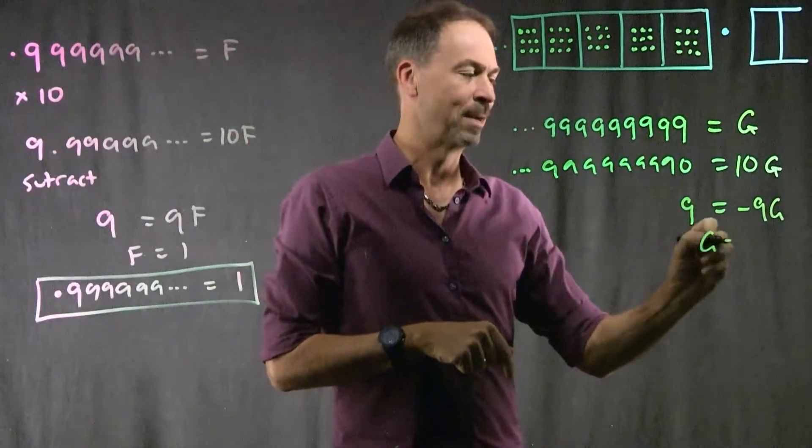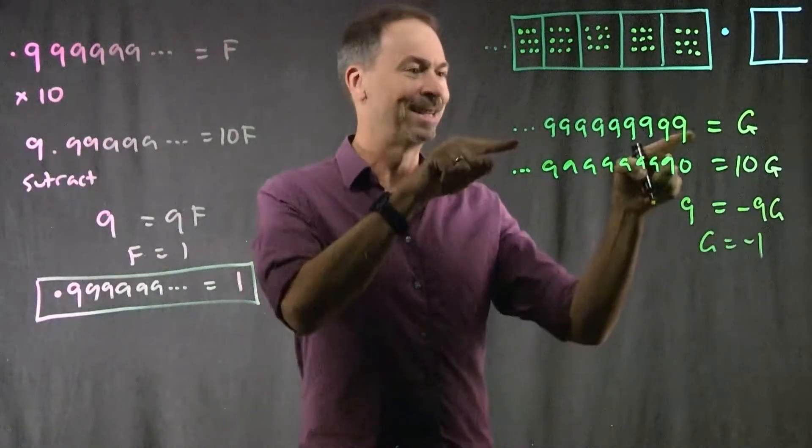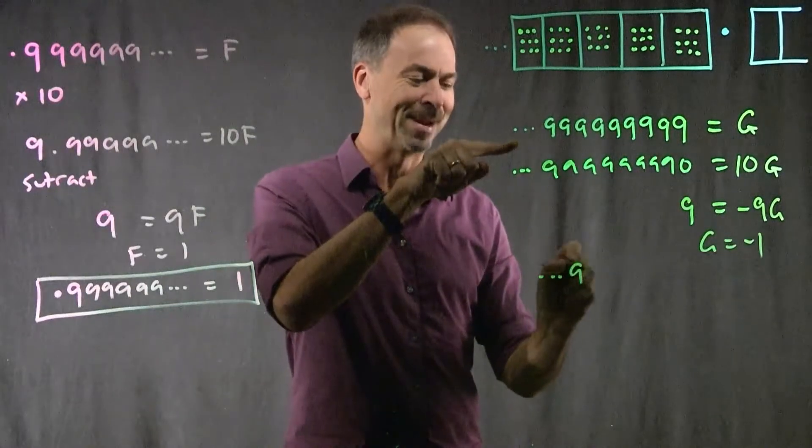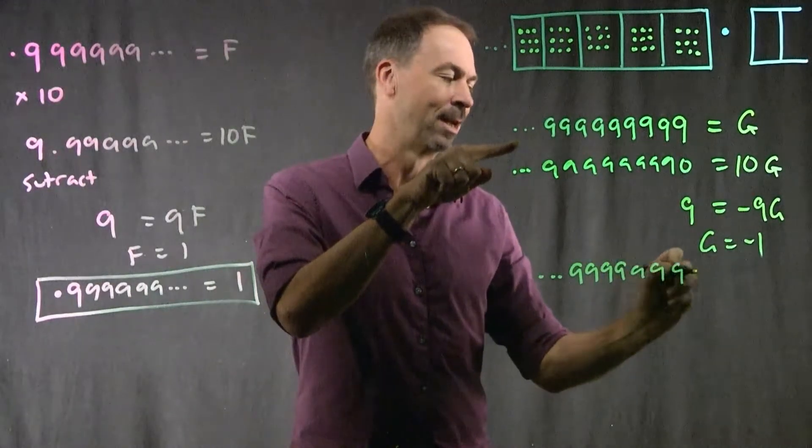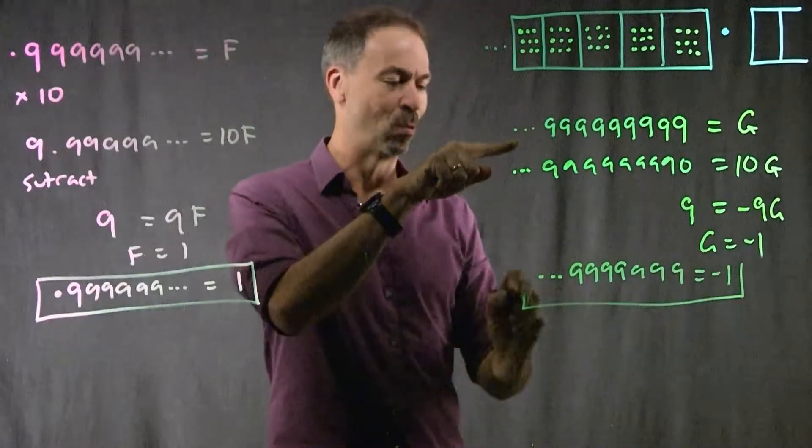Negative 9 Georges. So Georges must be negative 1, which means this number here, infinitely many nines to the left of the decimal point, must equal negative 1.